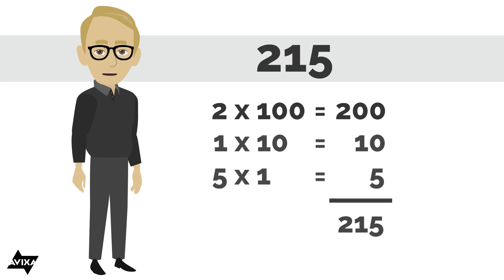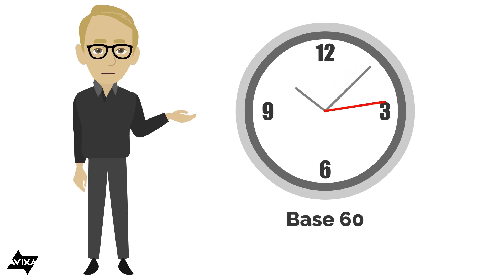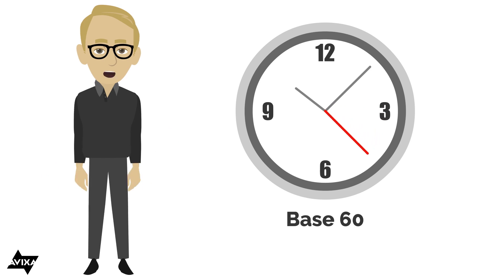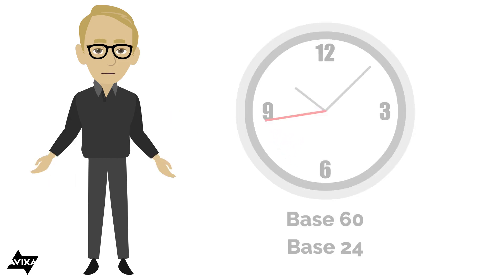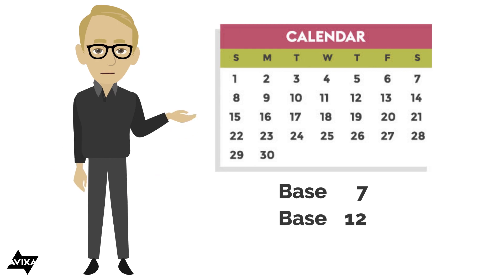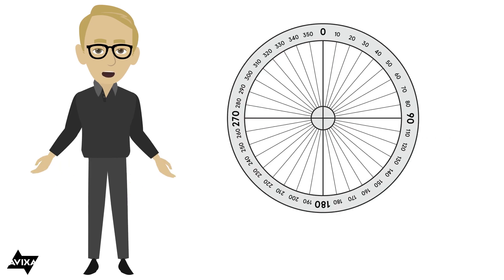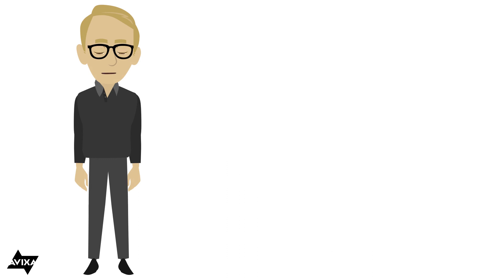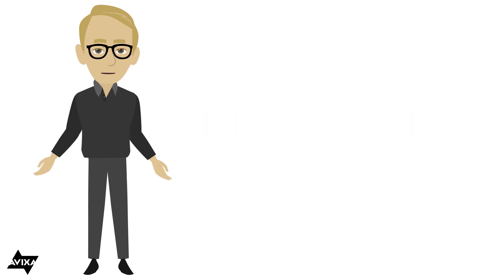There are other base systems that you're already using. Time, for example, is base 60, because there are 60 seconds in a minute, as well as 60 minutes in an hour. I could say a day is base 24, as we have 24 units, or hours, before we flip over to another day. A week is base 7, because we have 7 days in a week. A year could be base 12, if I wish to do it in months, or base 365, if I wish to do it in days. A circle is base 360, because there are 360 degrees in a circle. A foot in length, if I want to do inches, is base 12, because there are 12 inches to a foot.